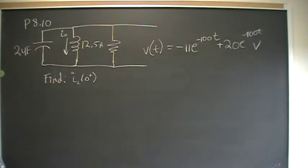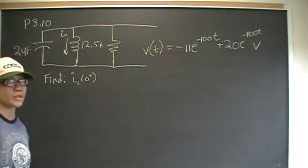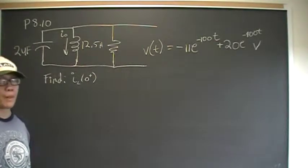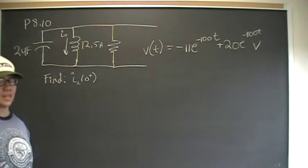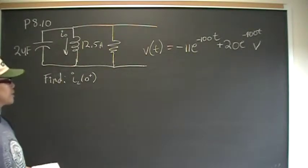And we are asked to find the general equation for the inductor current. This problem actually ends up being trivially easy, because we have an equation for that. We have all the things that we need to solve this.